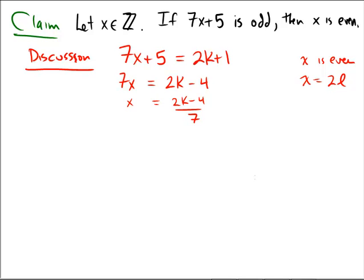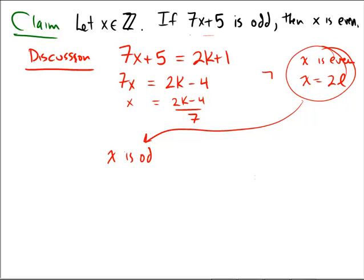So that would mean that instead of starting off with 7x plus 5 being odd, we would start off with the negation of this one. We would say, not x is even, and instead say, let's suppose that x was actually odd.